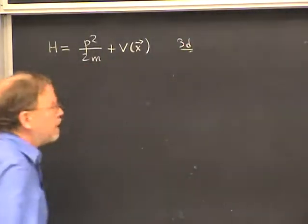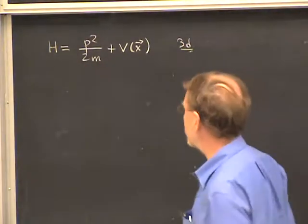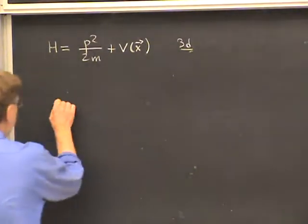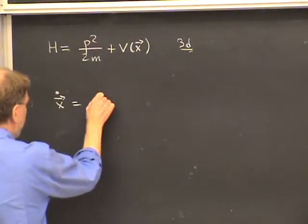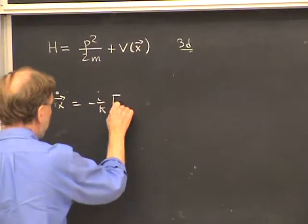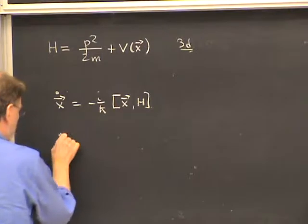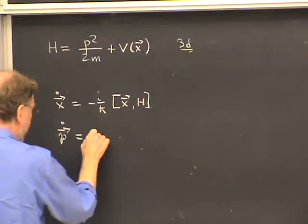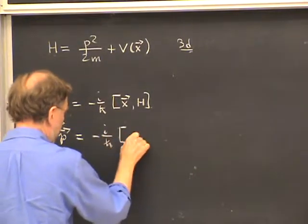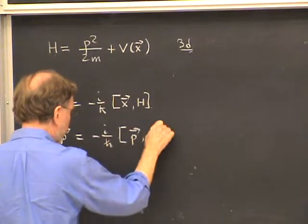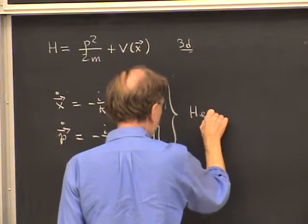I'd like to begin by writing down the Heisenberg equations of motion for this Hamiltonian. The equations of motion are that x-dot is minus i h-bar times the commutator of x with the Hamiltonian. Similarly, the time derivative of the momentum operator is minus i h-bar times the commutator of the momentum with the Hamiltonian. These are the Heisenberg equations of motion.